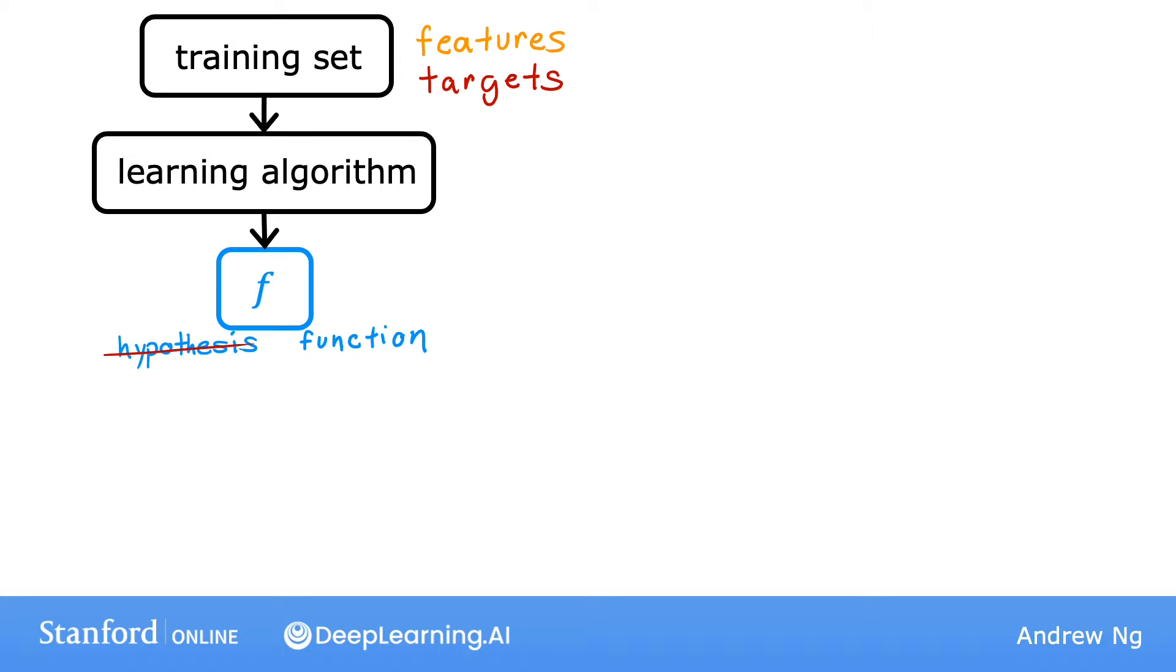And the job of f is to take a new input x and output an estimate or prediction, which I'm going to call y-hat. And it's written like the variable y with this little hat symbol on top. In machine learning, the convention is that y-hat is the estimate or prediction for y.